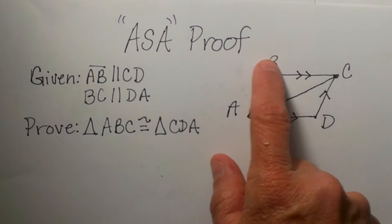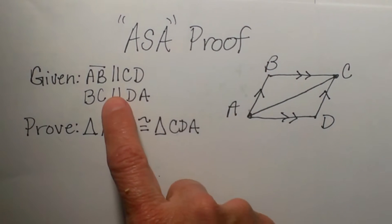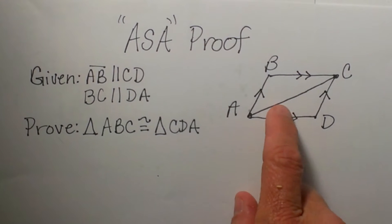We have BC, this top side, and DA, this bottom side. They are also parallel. Notice we have the arrows signifying that those two are parallel.